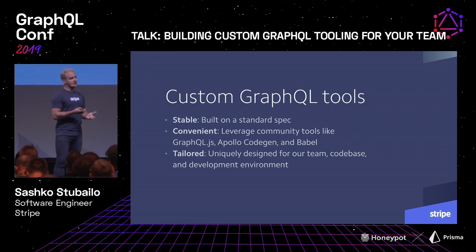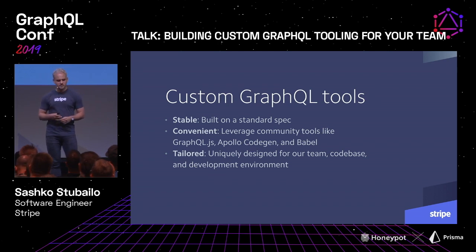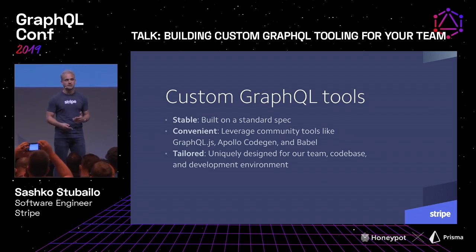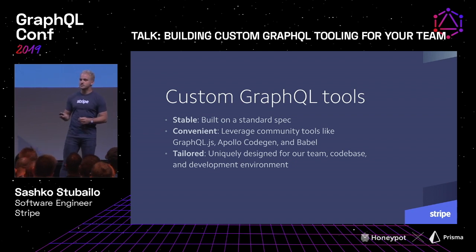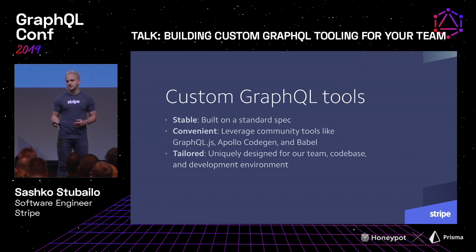Custom GraphQL tools are great because the spec is really stable, so you can rely on them working for a long time. It's really convenient to build them because you can leverage community tools like GraphQL JS, Apollo Code Gen, and Babel. And as you can see with these two examples, it's been really nice to have tools directly integrated into our specific environment at Stripe — our component system, prototyping tool, and CI environment.